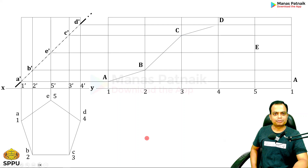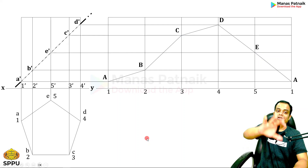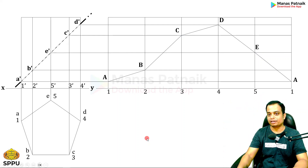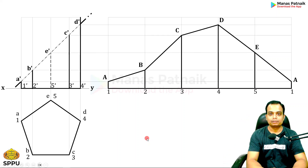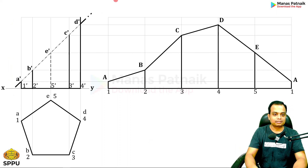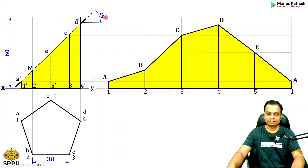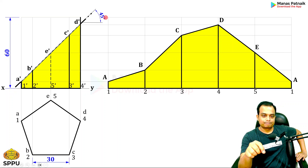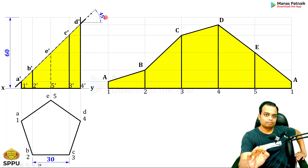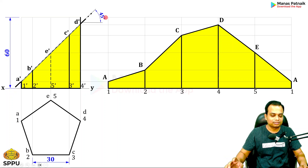Join all the cut points A, B, C, D, E in proper sequence with straight lines to complete the development. For professional-looking work, draw everything initially with a hard pencil (4H), then overwrite with an HB pencil. Mark the dimensions: 30 mm width, 60 mm height, and 45 degrees for the cutting plane. Coloring is added just for the thumbnail. PDF solutions for all Pune University problems will be available in a separate folder inside the main engineering drawing folder.